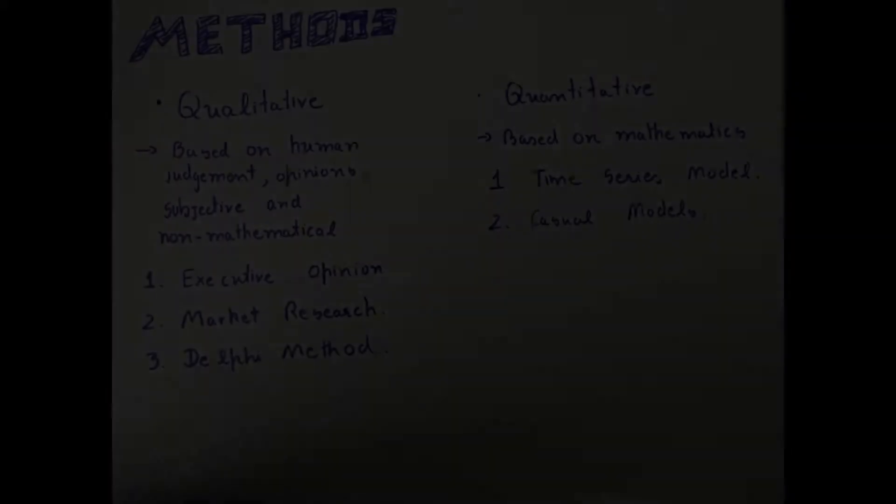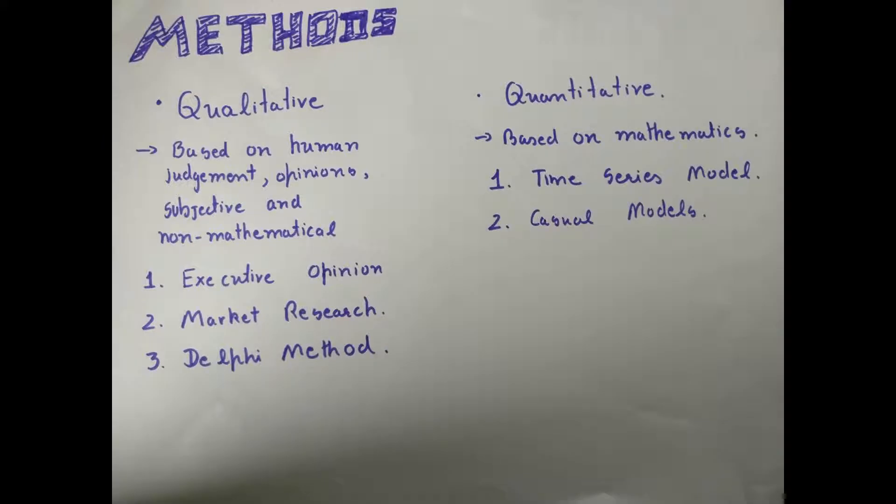Now we will be seeing the different methods for forecasting. There are two methods of forecasting: qualitative and quantitative. As the name suggests, qualitative is based on human judgment and opinions—it is subjective and non-mathematical. Quantitative is based on mathematics.